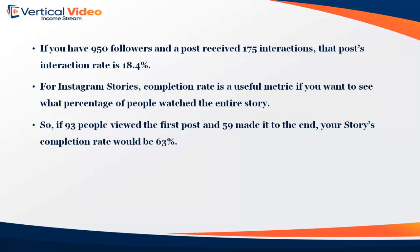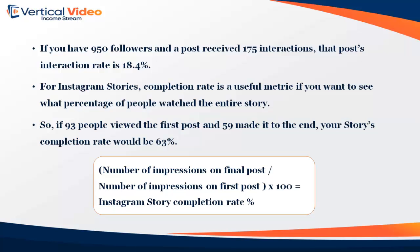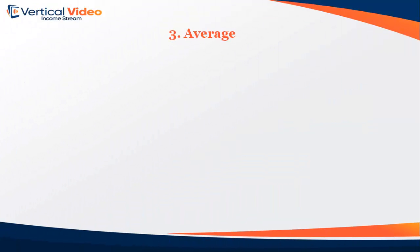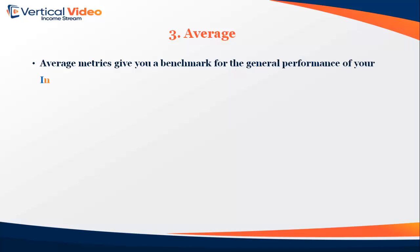So if 93 people viewed the first post and 59 made it to the end, your story's completion rate would be 63%. The formula is: Number of Impressions on Final Post ÷ Number of Impressions on First Post × 100 = Instagram Story Completion Rate Percent. Three: Average. Average metrics give you a benchmark for the general performance of your Instagram posts.